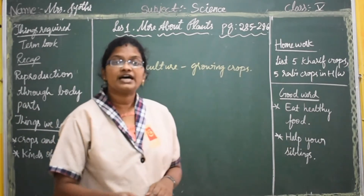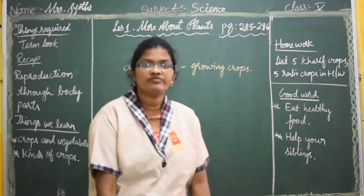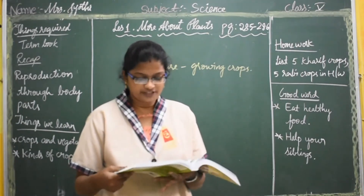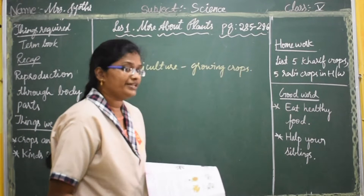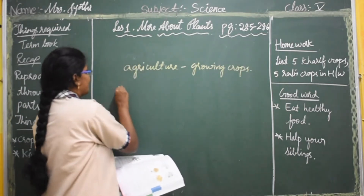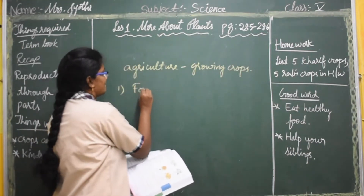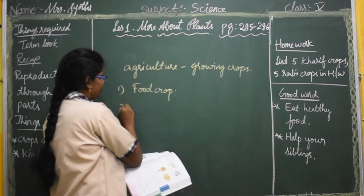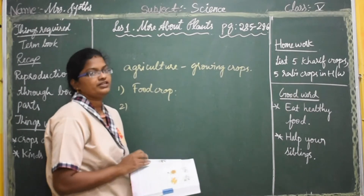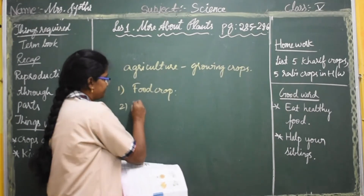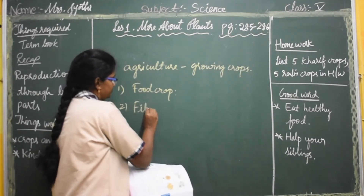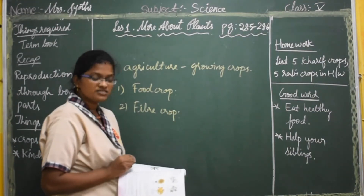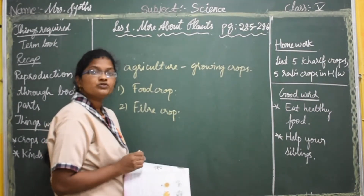There are kinds of crops. The textbook gives three types of crops. One is the food crop, the second one is fiber crop, and the last one is oil-producing crop.